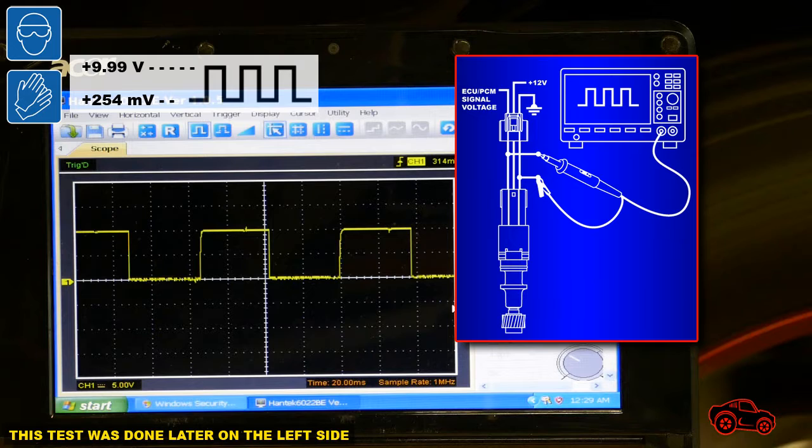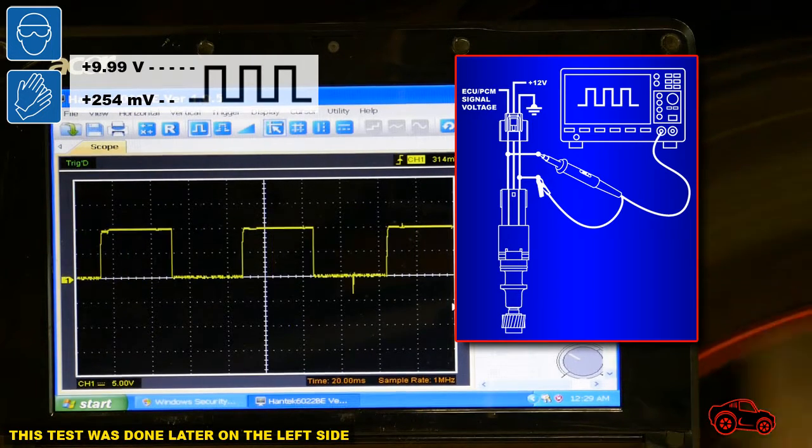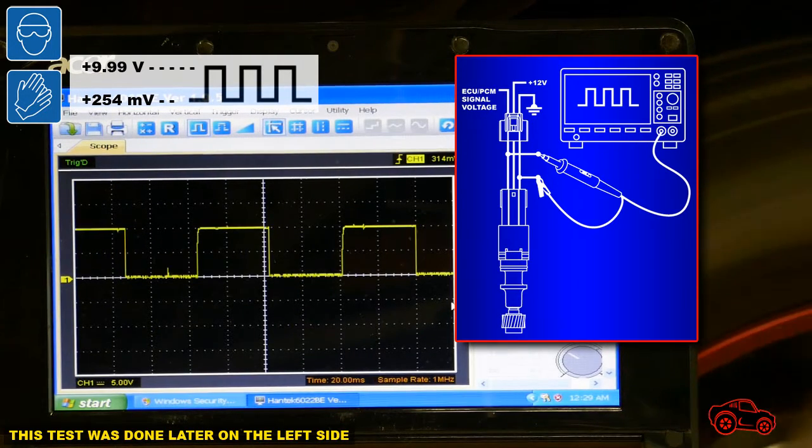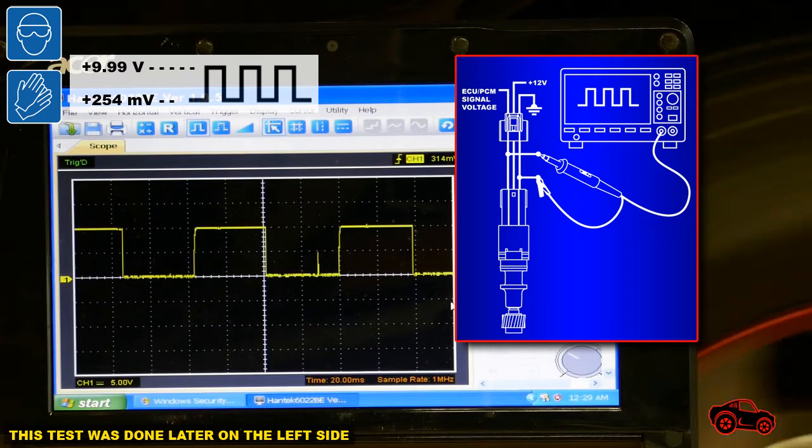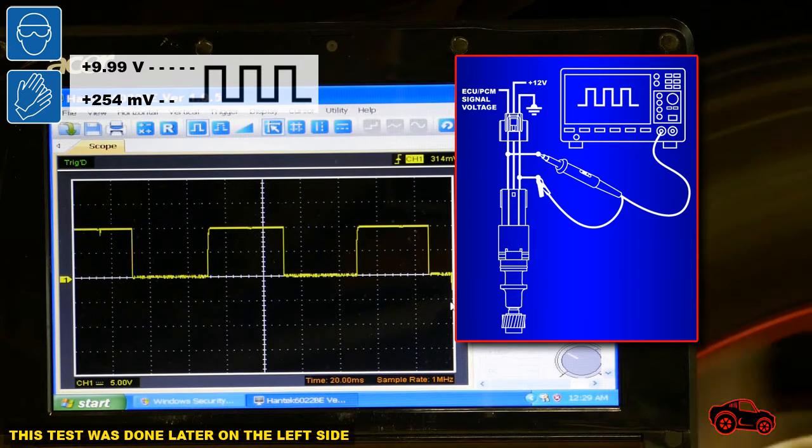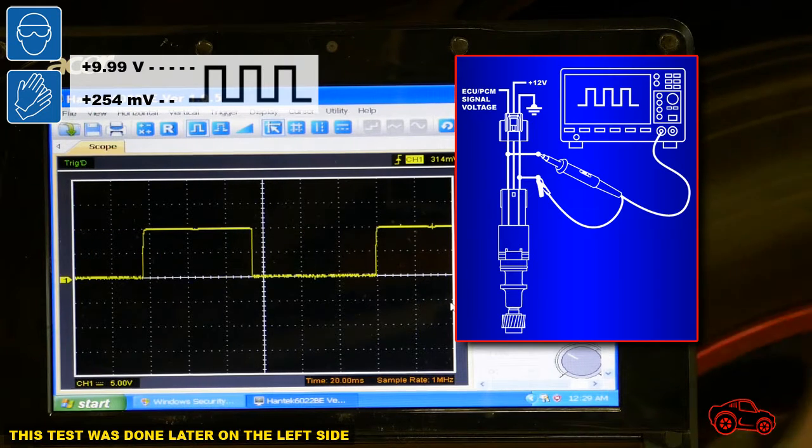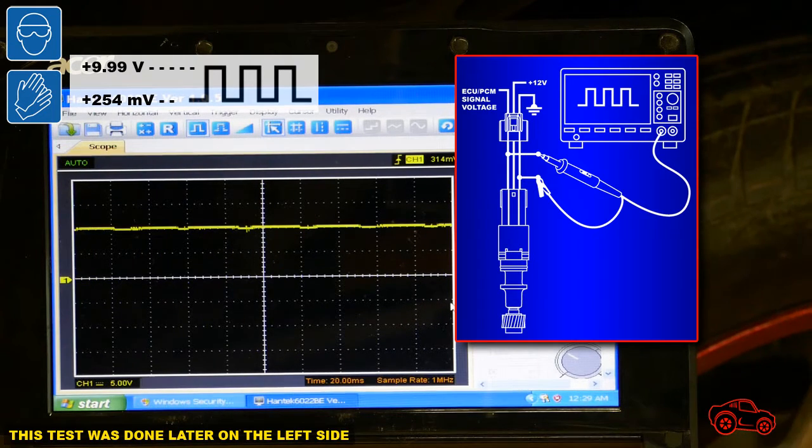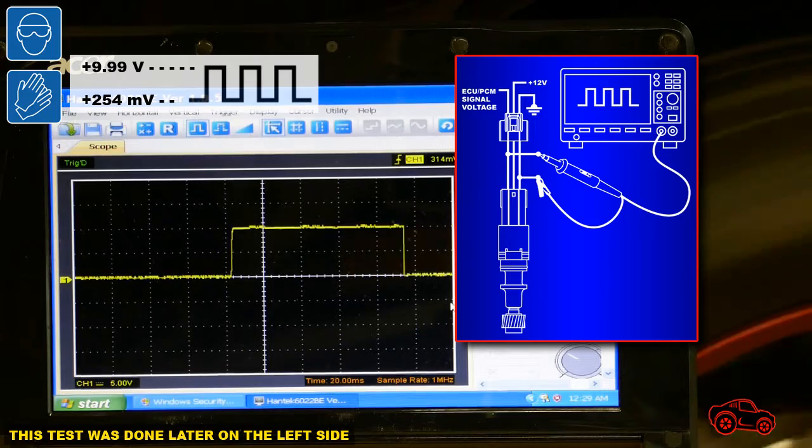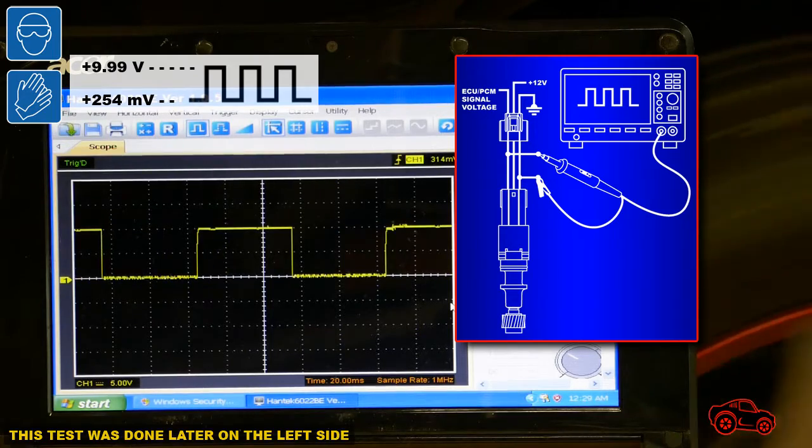Later I also connected the scope. I did my scope test when the engine was running and when the transmission shifter was in D4. The scope display was set to 5 volts per division. While the engine was running and the alternator was charging, the peak voltage was near 9.9 volts.